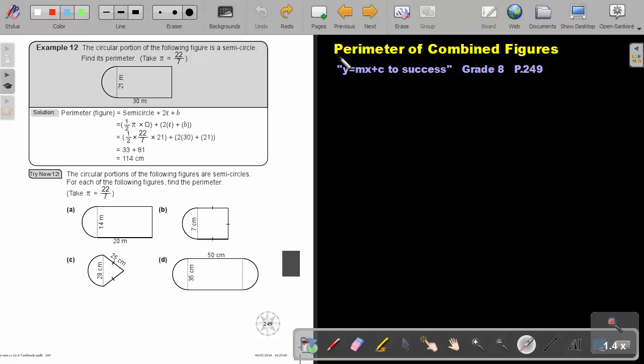Part 7. We are going to continue with the perimeter of combined figures. You will find this on page 249 in the Namibia Mathematics Grade 8 textbook, Y equals MX plus C to success.